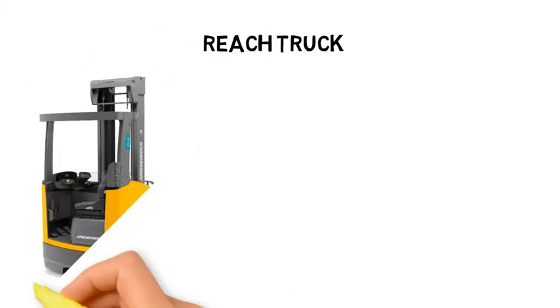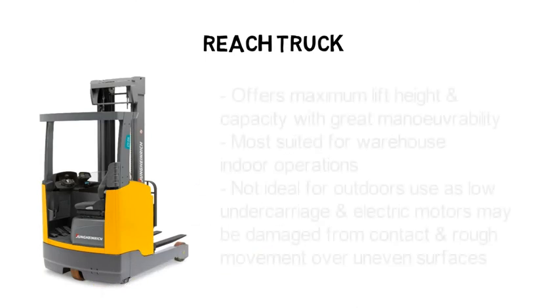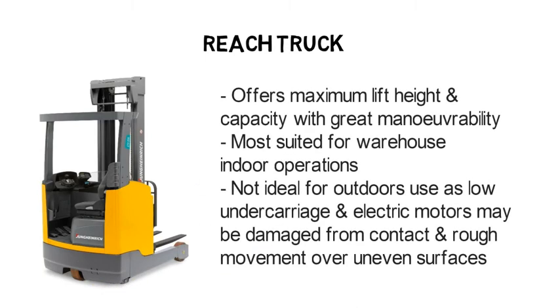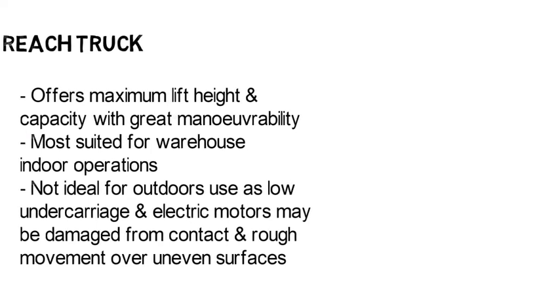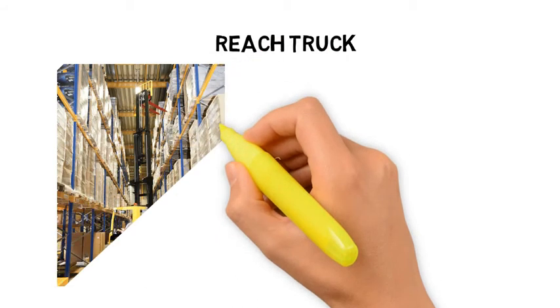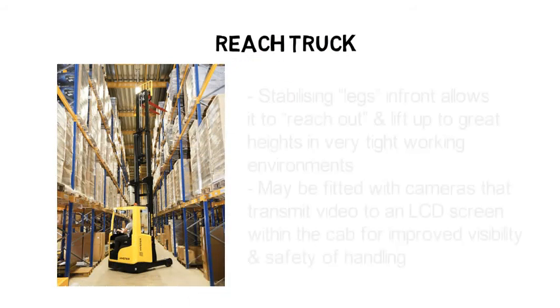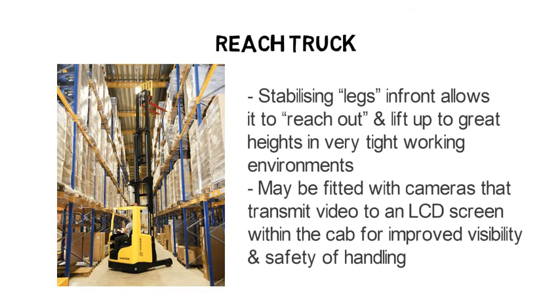The reach truck offers maximum lift height and capacity with great manoeuvrability. It is commonly deployed for indoor warehouse operations, as its low undercarriage and electric models make it unsuitable for outdoor use like the forklift. The design of the reach truck allows it to lift loads to great heights in a very tight working environment, making it ideal for picking pallets from pallet racking. It may be fitted with cameras that transmit video to an LCD screen within the cab, giving the operator improved visibility and safety when putting away or retrieving pallets at height.